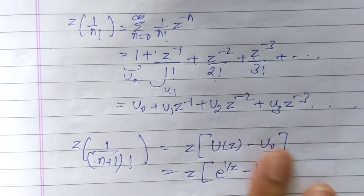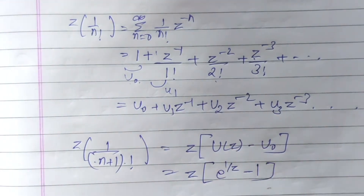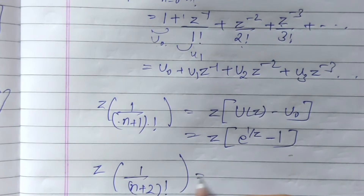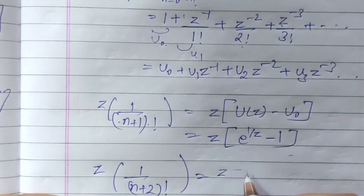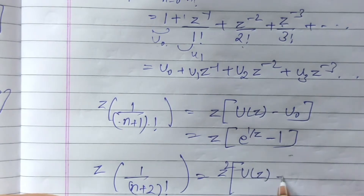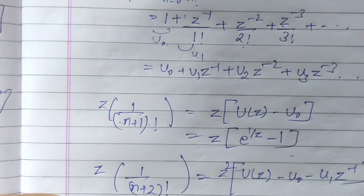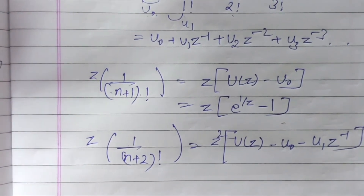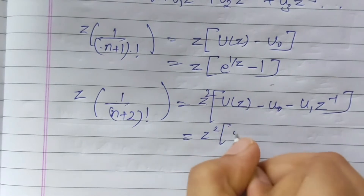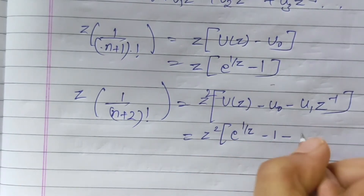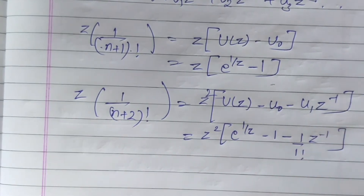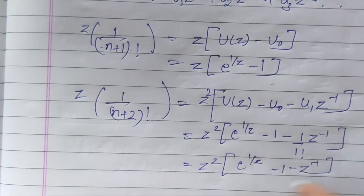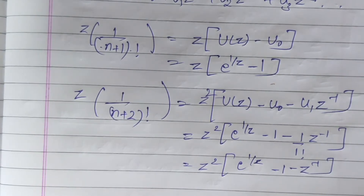Now by using the shifting property for two units to the right, we shift to two places to the right. That is nothing but z squared of u(z) minus u0 minus u1 z to the power minus 1. This is all according to the formulas we have studied before. So this problem is solved; we will take one more question.